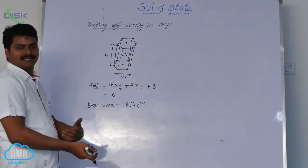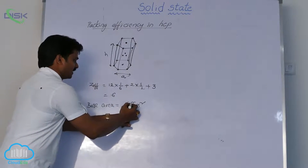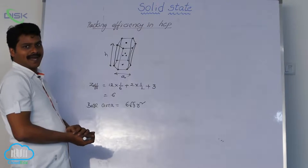This hexagon contains 6 equilateral triangles. So from each equilateral triangular area, we will get a formula, 6 root 3 R square.